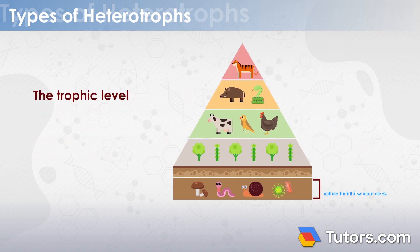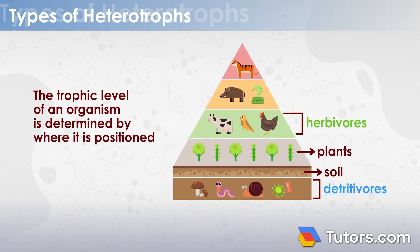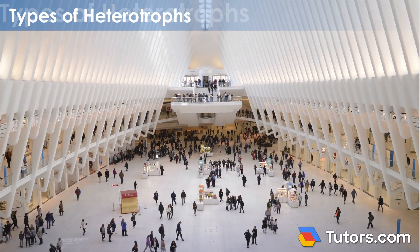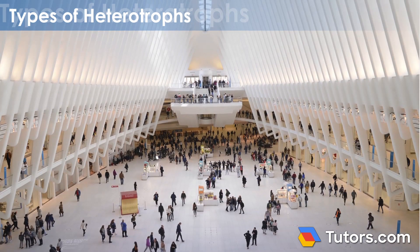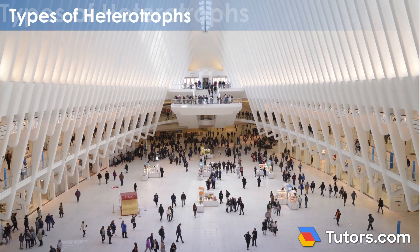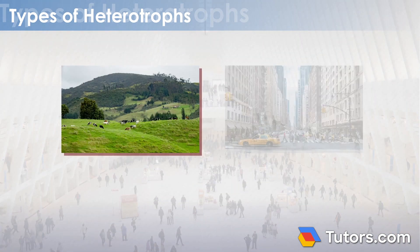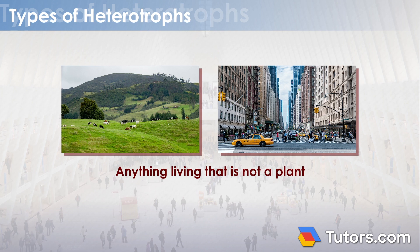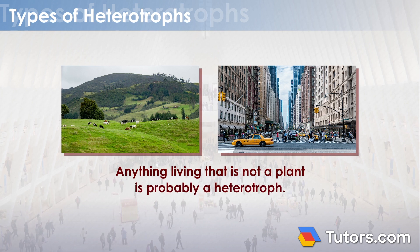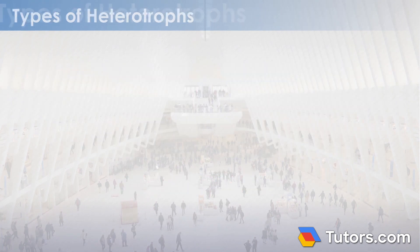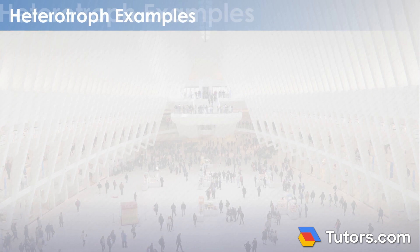The trophic level of an organism is determined by where it is positioned in a food web. You are surrounded by examples of heterotrophic organisms. If you examine any landscape or cityscape, anything living that is not a plant is probably a heterotroph. Here are some examples for each of the three types.